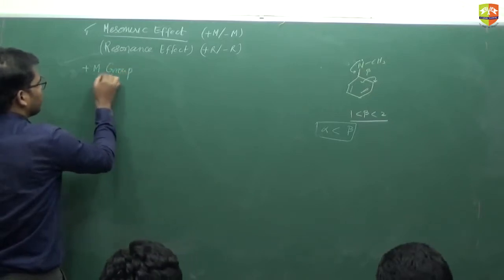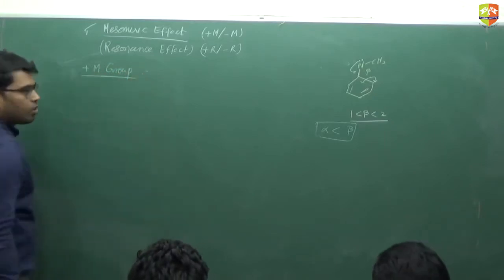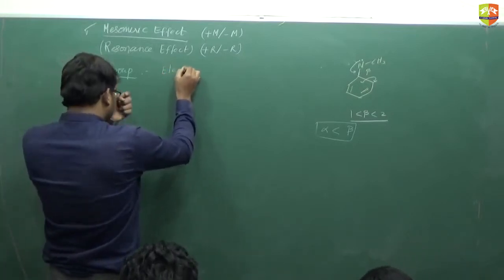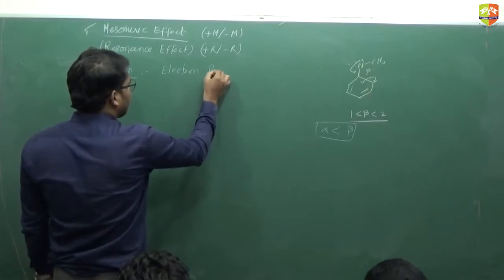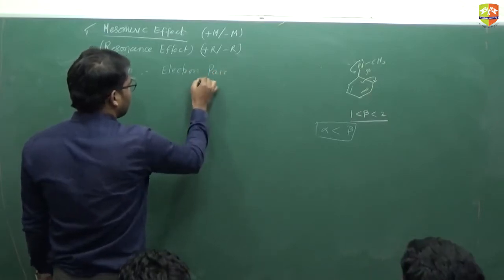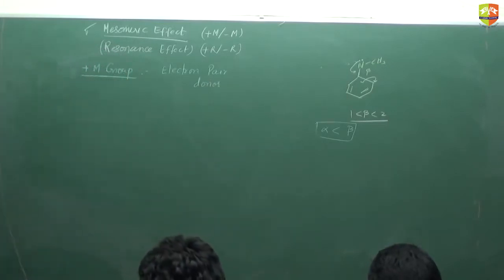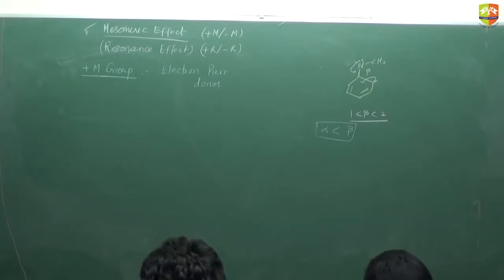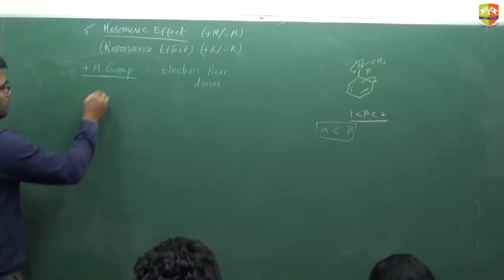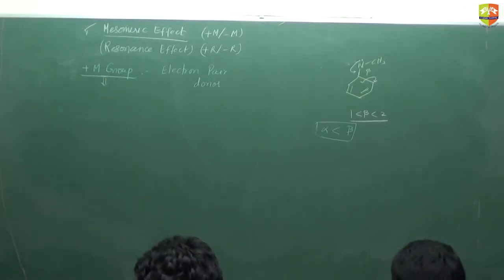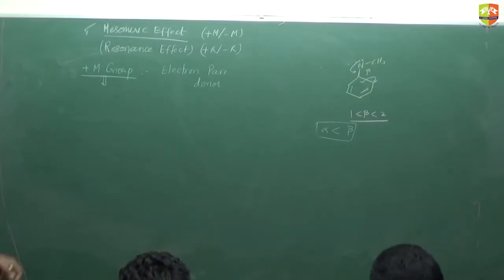Plus M groups are electron pair donors — they release an electron pair. The electron pair involved in this is either a pi bond or a lone pair, because in the mesomeric effect (resonance), sigma bonds do not participate — only pi electrons or lone pairs are involved. So plus M groups are those which have at least one lone pair present on the first atom.